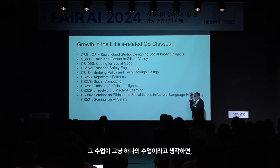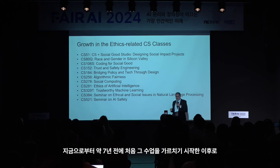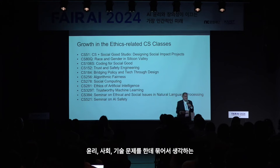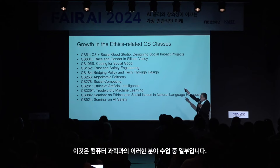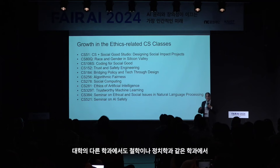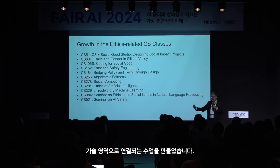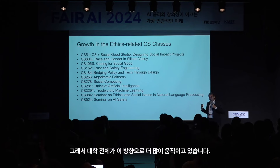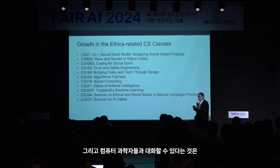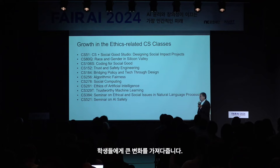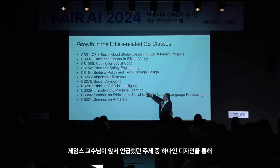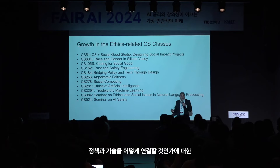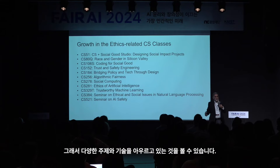Since we first started teaching that class about seven years ago, there's been a blossoming of other classes focused on ethics, society, and technology. This is just a sampling from the CS department. Other departments like philosophy and political science have also created classes bridging into the technological realm. The university as a whole is moving in this direction, benefiting students in computing and other disciplines. Topics include ethics of AI, trustworthy machine learning, and bridging policy and technology through design.